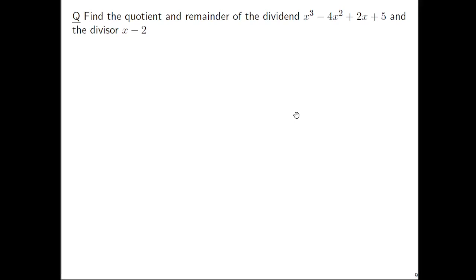We're going to do this long division thing again. We'll find the quotient and the remainder of the dividend x cubed minus 4x squared plus 2x plus 5 and the divisor x minus 2.